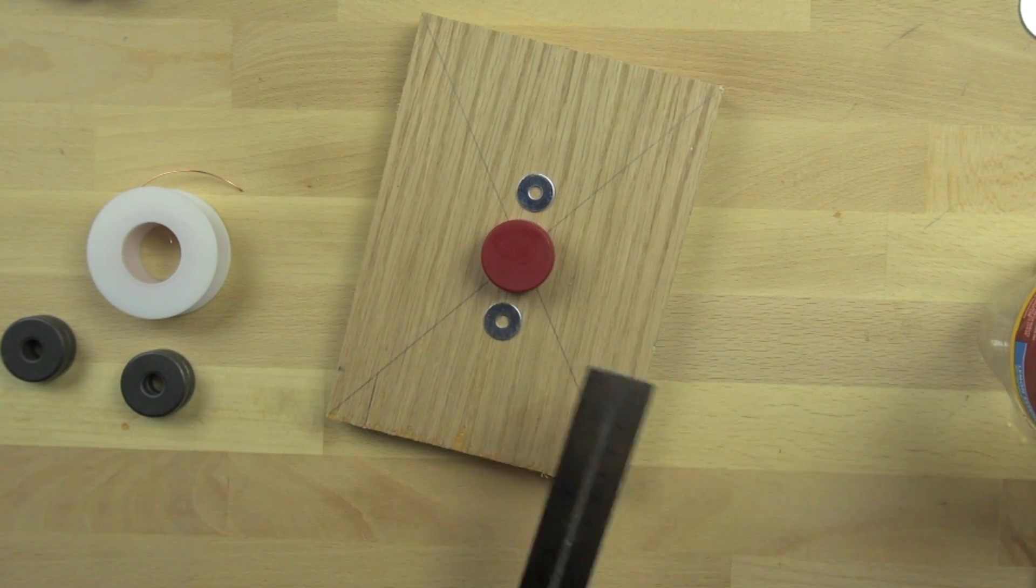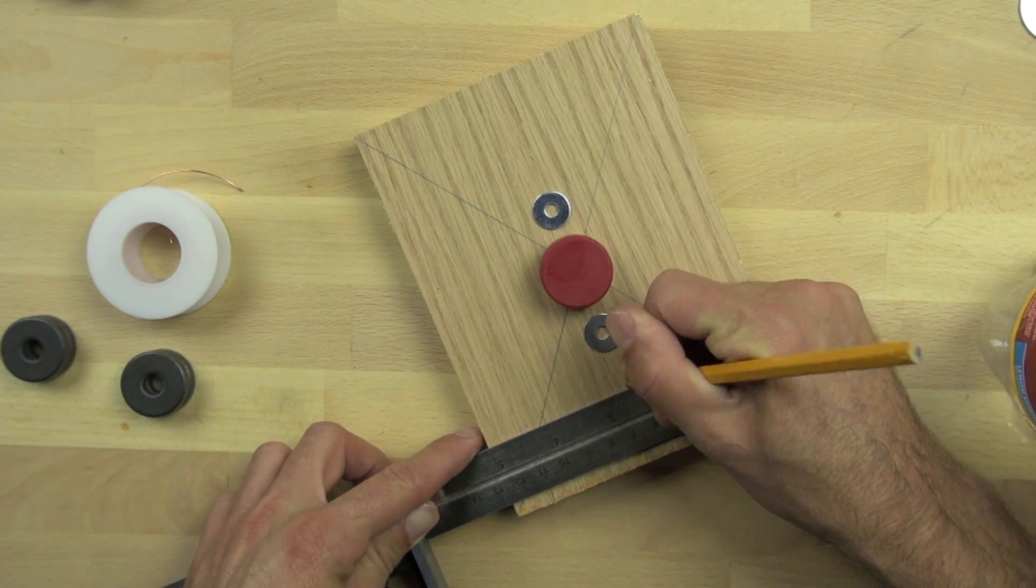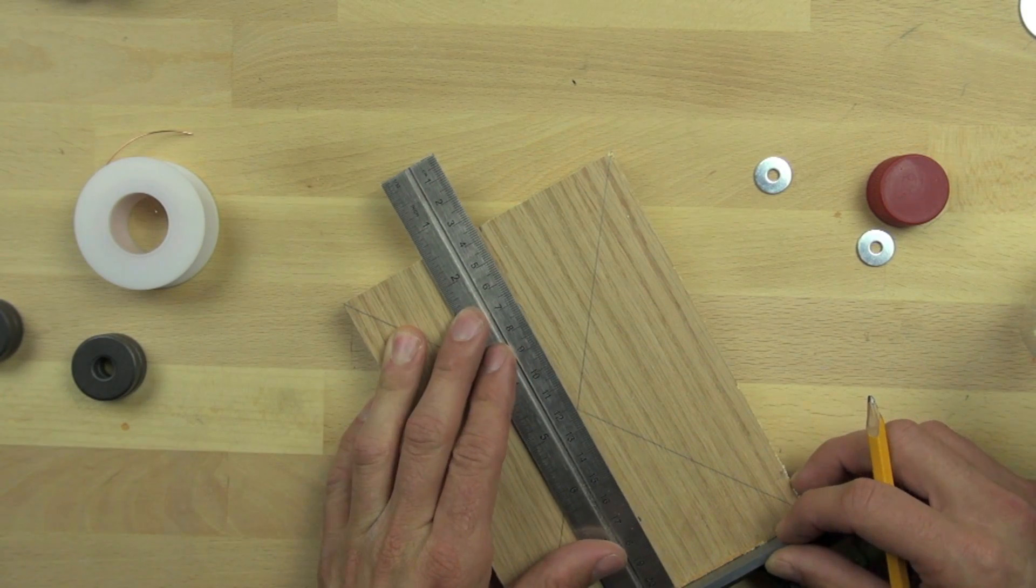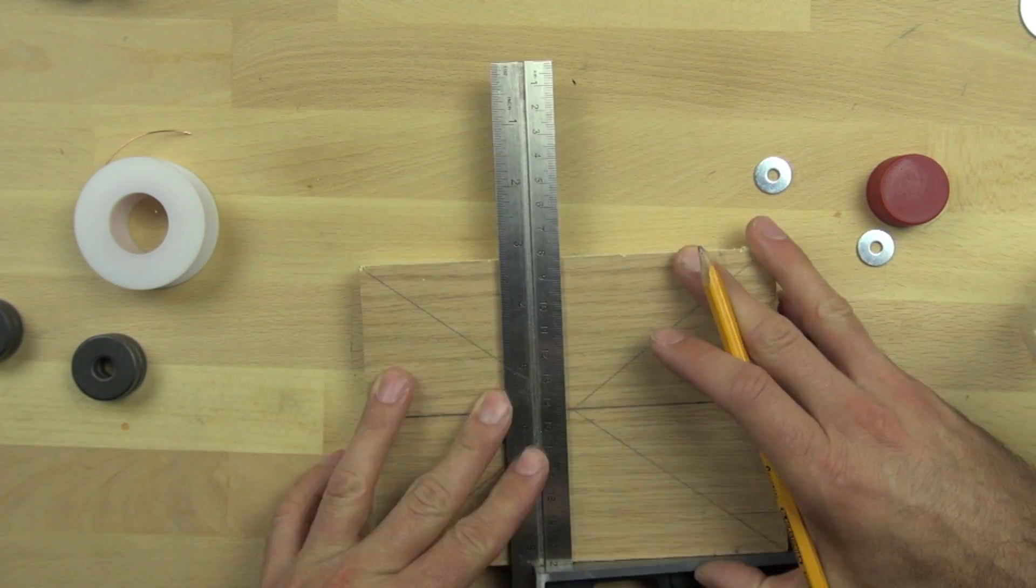Of course the cap is what we're going to make our winding around, so the washers that are going to support the winding need to be pretty close to the cap. And the permanent magnets also need to be pretty close.